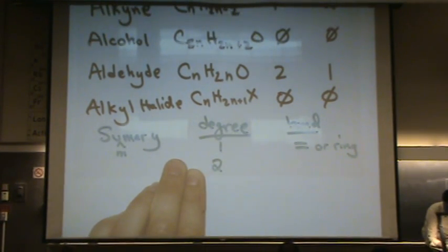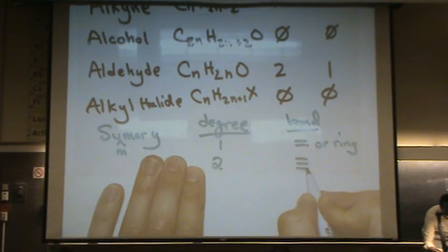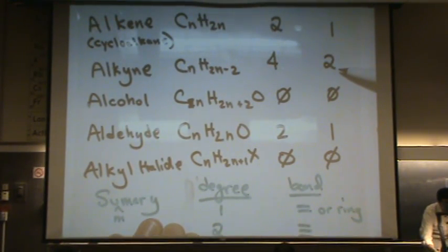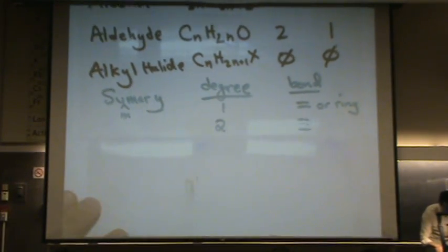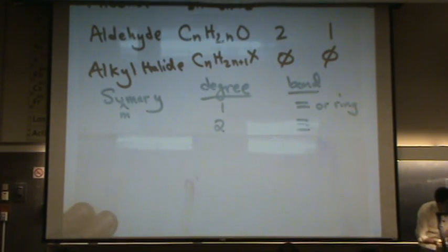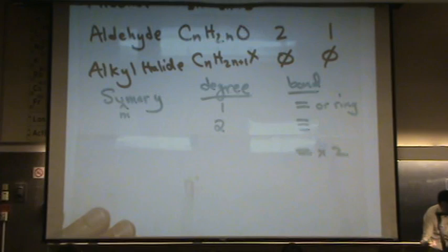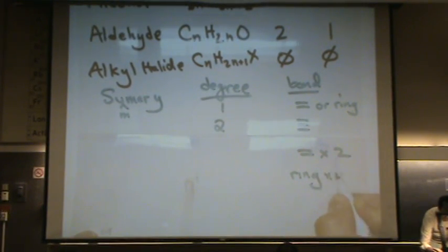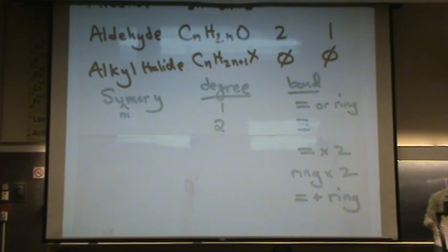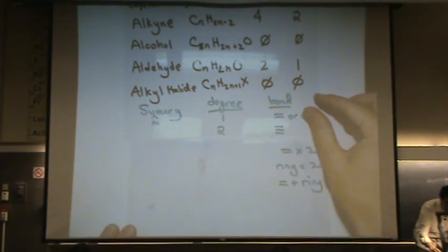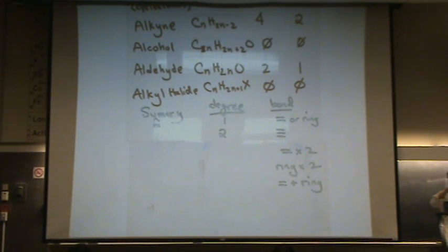If you ever calculate two degrees of unsaturation, that means you have a triple bond. So look at the alkyne. That's two degrees of unsaturation. Or it's a double of something else. So there's two double bonds, or there's two rings. Or what's the last possibility? One double bond, one ring. So if you ever calculate two degrees of unsaturation, it could be the alkyne that you saw up in the middle of the table, or it could be a mixture of other things. Two double bonds, or a ring and a double bond, or two rings.